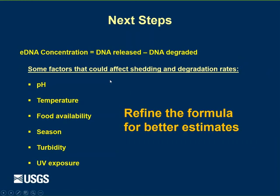We also want to refine our understanding of the eDNA formula — how much does pH affect the degradation rate, how much does temperature affect the shedding rate, what's the contribution of food availability. Better understanding the organisms we're studying allows us to use this tool to get estimates of how many of them are out there. Fishermen didn't just build a net one day and go out and catch fish — they refined it and made it better. And now we're doing the same thing.